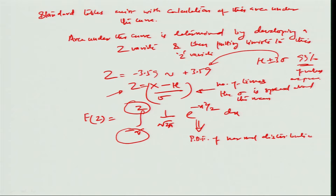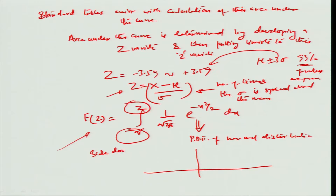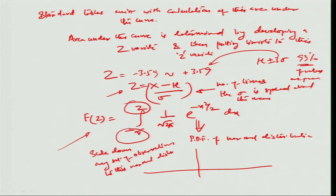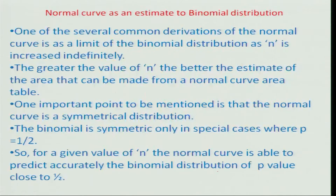This is the common knowledge needed about the normal distribution. The idea is that if we can scale down any set of observations to this normal distribution, then the occurrence of an event within the area under the curve becomes very easy to compute, which is important for statistical quality control.